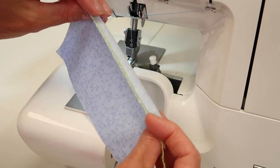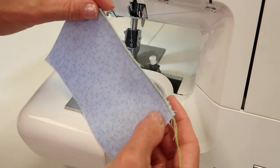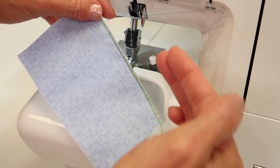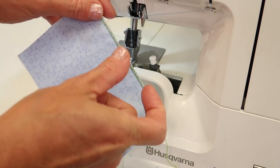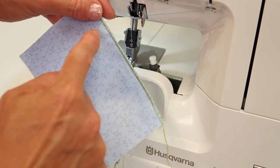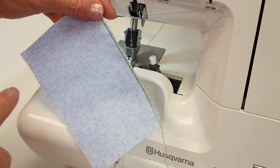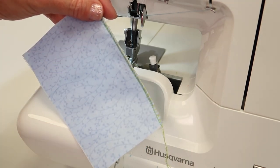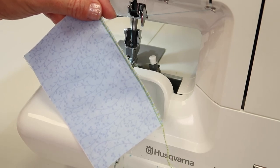It's so nice that you can just use one thread in the looper because it wraps around the whole edge. You really can get any density that you want, and of course if you want this to be a contrasting color, put that color in the lower looper when doing a two thread.